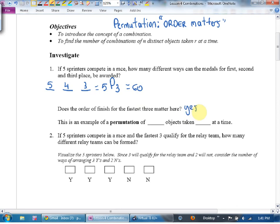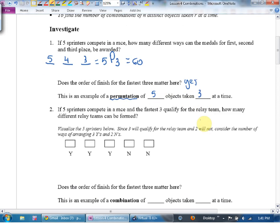This is an example of a permutation of five objects taken three at a time. However, what if you're at the Olympic trials? At the Olympic trials, the top three advance to the Olympics. You don't care whether you finish first or second or third. You just want to make sure you're part of the group.